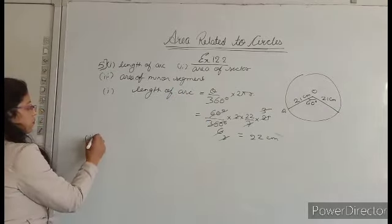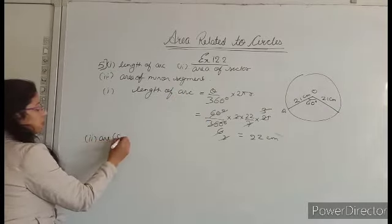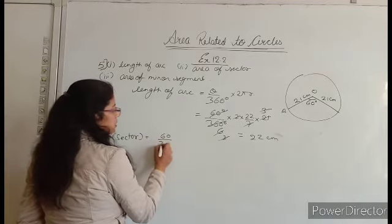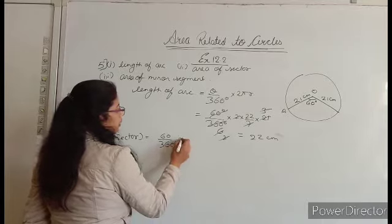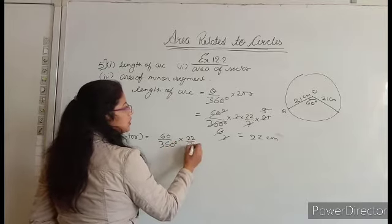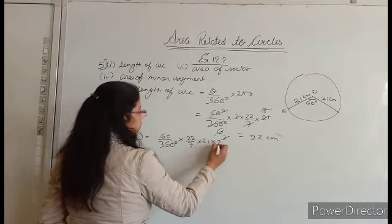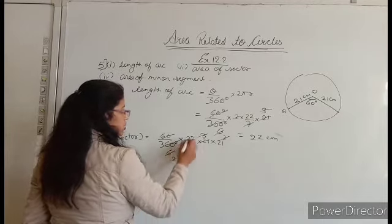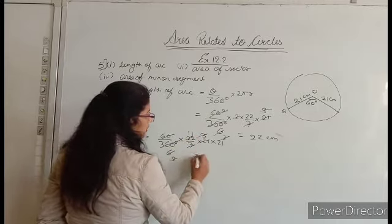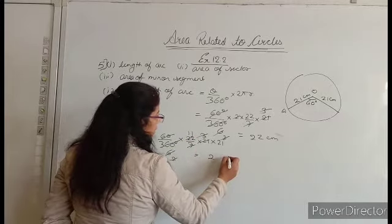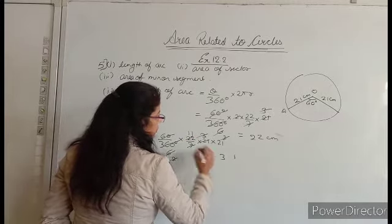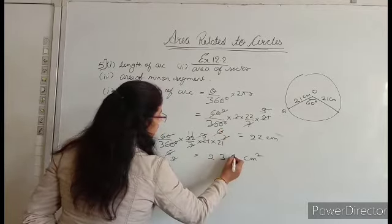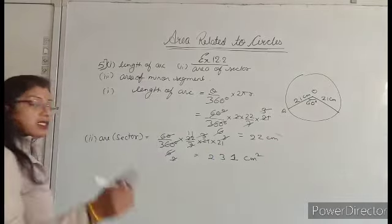Second, we have to find the area of sector. Area of sector equals theta upon 360 degree into pi r square — that is 60 upon 360 into 22 upon 7 into 21 into 21. After cancellation, you will get 231 cm square. This is the area of sector.